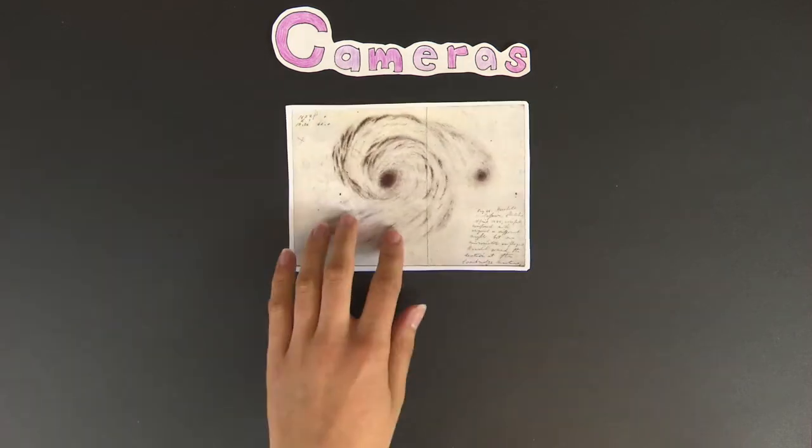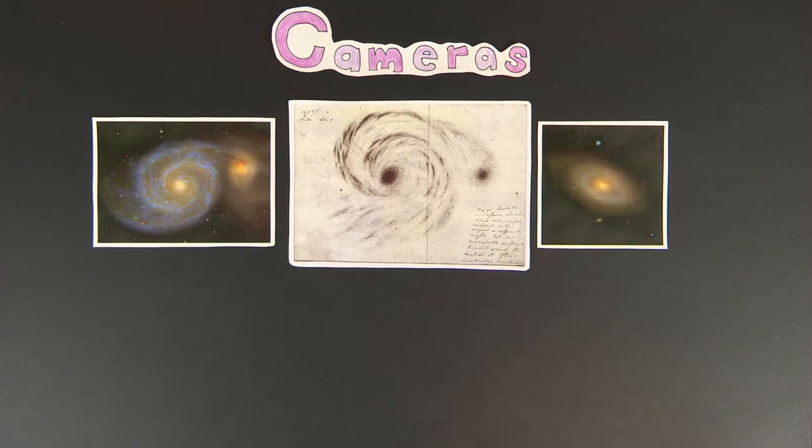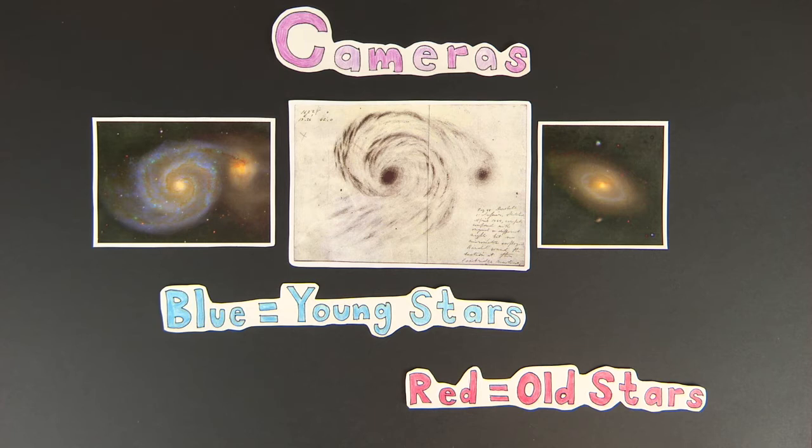M51, more commonly known as the Whirlpool Galaxy, can be seen here as a sketch by Charles Messier, compared to two photos taken by the Sloan Digital Sky Survey. The left image is M51, while the right is NGC 5750. The lack of colours in Messier's sketch highlights the importance of cameras in astronomy, with colours being an important tool in understanding the properties of a galaxy, such as its different structural components, the age of its stars, and how many stars it is currently forming.